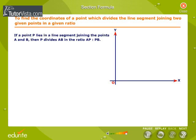If a point P lies in a line segment joining the points A and B, then P divides AB in the ratio AP is to PB.